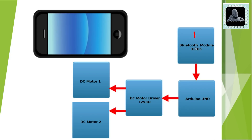The first block is the Bluetooth module, which is mainly responsible for establishing the connection between our Android mobile phone and the circuit. The second block is our Arduino Uno, which is the central processing unit for this project, and it will be controlling and coordinating all the other blocks present on our circuit.